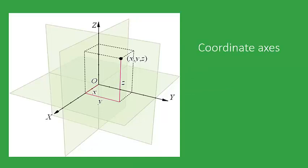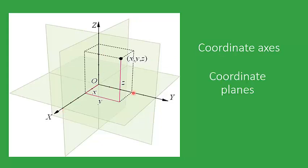In two-dimensional geometry we had the x-axis and y-axis. In three-dimensional geometry, by extending this definition, we add a z-axis to this coordinate system. These are the three coordinate axes, and individually they determine three different coordinate planes. We have the plane passing through the x and y axes, called the xy-plane, then the yz-plane, and the xz-plane. So you have three planes corresponding to each pair of coordinate axes.